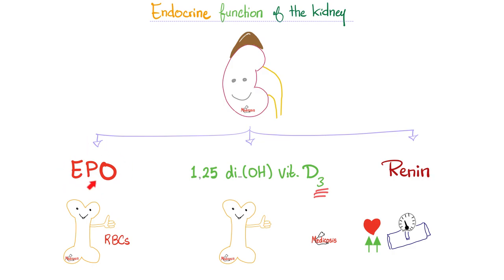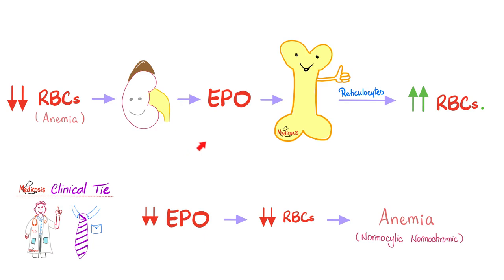What's the main function of EPO? To stimulate your bone marrow to make lots of red blood cells. What's the function of vitamin D? To keep your bones healthy and to regulate the homeostasis of calcium and phosphate. What's the function of renin? To raise your blood pressure and to prevent it from falling. If EPO's job is to stimulate the bone marrow, what do you think the stimulus for EPO release will be? Anemia. Because if I have anemia, I will respond by increasing my EPO release from my kidney, which will increase red blood cells.